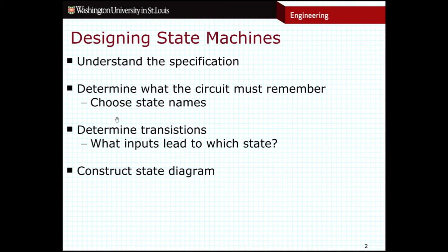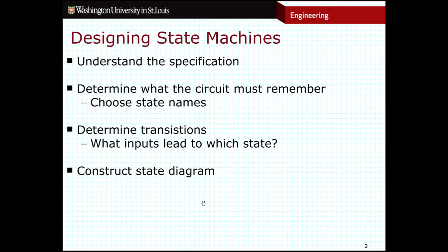The next step is to determine the transitions that are going to take place from one state to the next. I have inputs coming in — which I also need to determine — and based on those inputs and the current state I'm in, what state am I going to end up in next? That's the third step. And then finally the last step is to construct our state diagram, including the outputs, so we need to include outputs in each of our individual states.